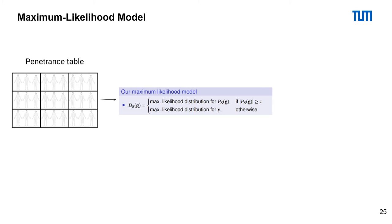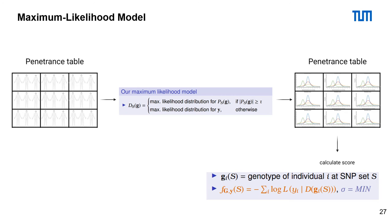If this requirement is satisfied, we calculate the maximum likelihood distribution of the cell. Otherwise, we use the previously calculated global maximum likelihood distribution. To calculate the score for a fixed SNP set, we go over all samples and look at the likelihood for the phenotype at each sample — the maximum likelihood distribution for the genotype at this SNP set. The score is then the negative log likelihood over all samples.